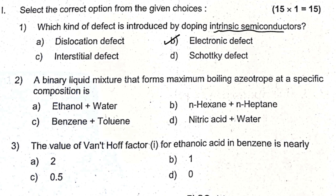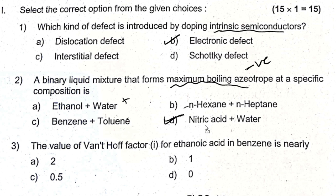A binary liquid mixture that forms a maximum boiling azeotrope — a maximum boiling azeotrope is formed by a negative deviating non-ideal solution. Ethanol-water is positive deviating. Nitric acid plus water is negative deviating. So D is the answer.